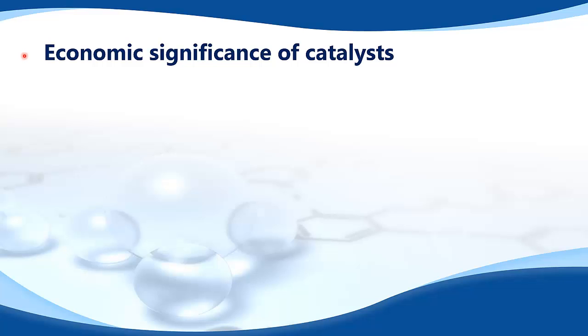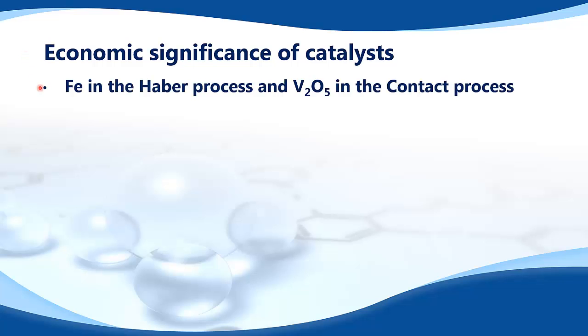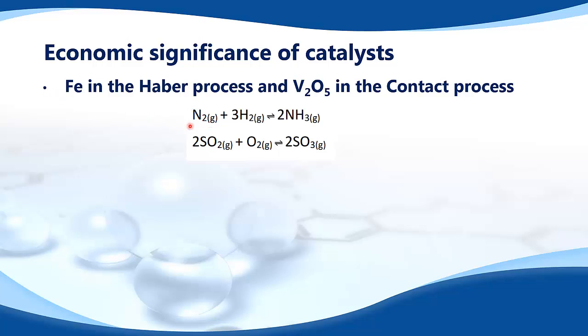Next we look at the economic significance of catalysts — specifically iron in the Haber process and vanadium pentoxide in the contact process. Here are the equations for both of those reactions.